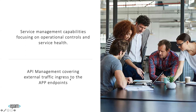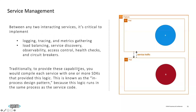Service management focuses on operational control and service health internally inside the cluster. API management is different — it's about protecting your services or cluster from external traffic through the ingress controller inside your EKS. For example, if we have service A and service B inside a cluster, we need to handle service management between them — extracting logs, implementing retry mechanisms (e.g., if a service is down, retry every two seconds for X attempts), and handling circuit breakers to limit the number of connections.